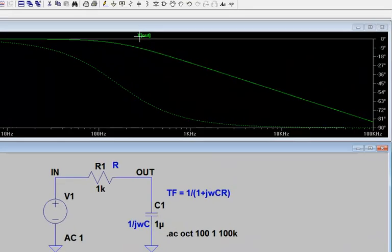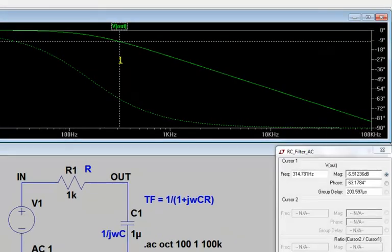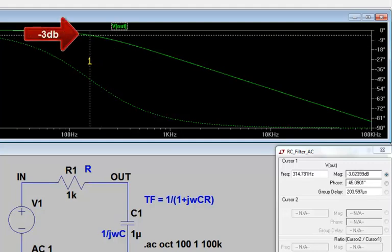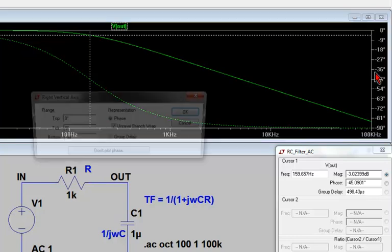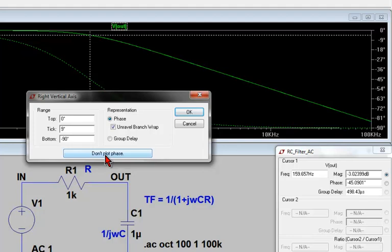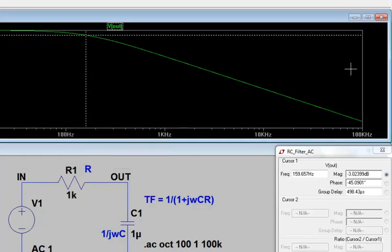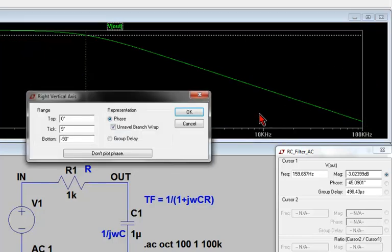Clicking on the plot label brings up our cursors, and by moving the cursors to the 3 dB point of the circuit, in the bottom right-hand corner we can see the 3 dB point occurs at 159 Hz, and at the 3 dB point we have a phase lag of 45 degrees. If you have several plots in one window, the phase plot can sometimes make the window look cluttered. To remove the phase plot, left click over the phase axis and hit don't plot phase. To get the phase back, left click over the phase axis and click OK.